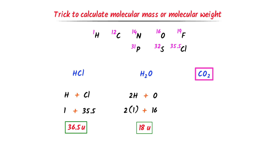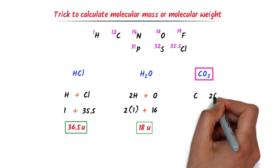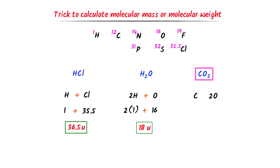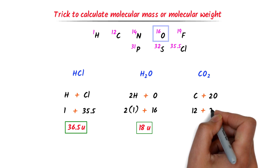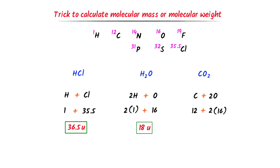In case of carbon dioxide gas, we can see that there is one atom of carbon and two atoms of oxygen. I add their respective atomic masses. The atomic mass of carbon is 12 units and the atomic mass of oxygen is 16 units. So I write 12 + 2×16, which equals 44 units. So the molecular mass of carbon dioxide is 44 units.